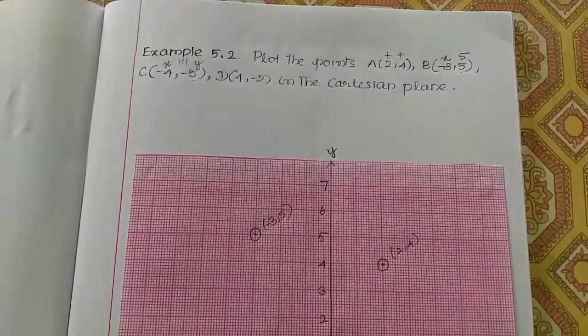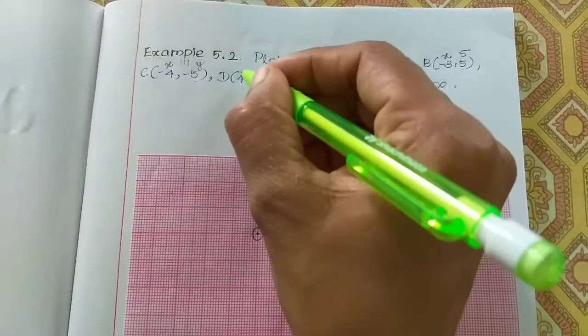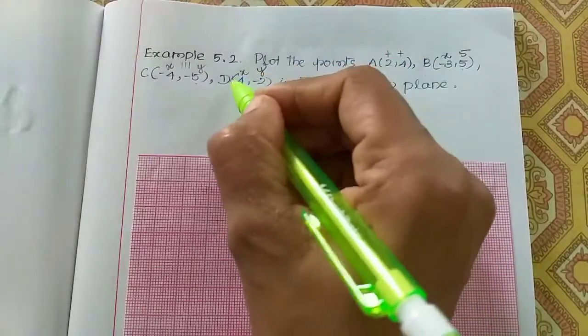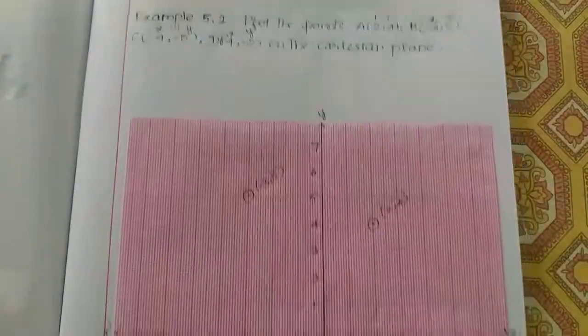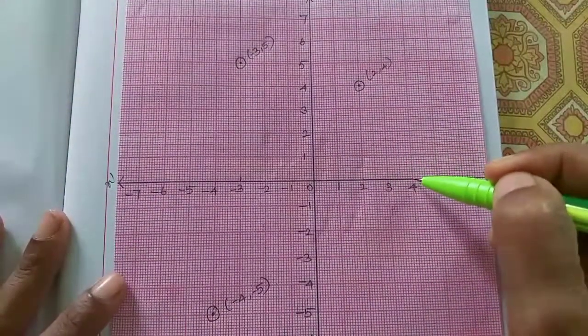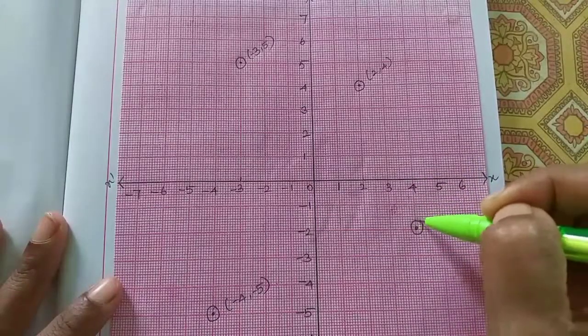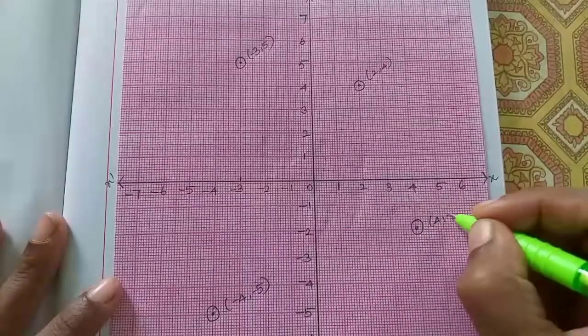Next, D is 4, minus 2. X-axis is 4, and y-axis is minus 2. This point is 4, minus 2.